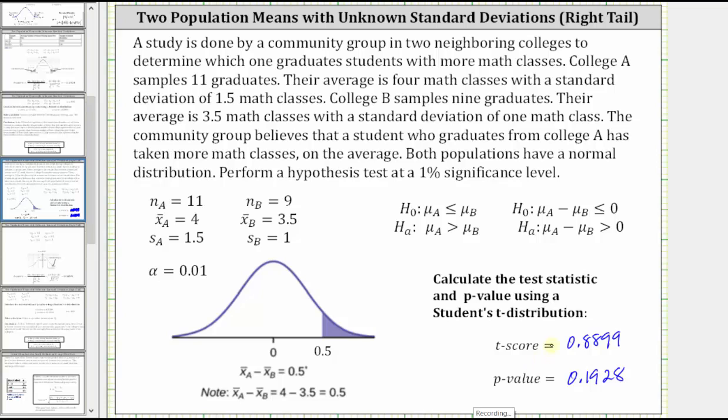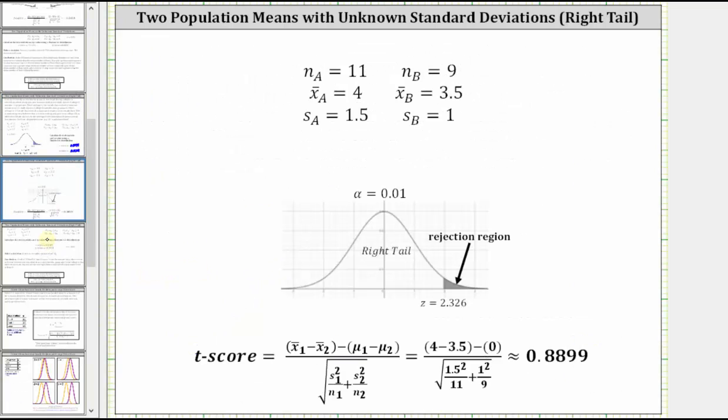Before we compare the p-value to alpha, let's take a closer look at the t-score of approximately 0.8899. If we were doing this by hand, we would take the alpha of 0.01 and find the corresponding z-score, which I've already done here. Notice z is equal to 2.326 when alpha is 0.01 for a right-tailed test. And we have the rejection region on the right.